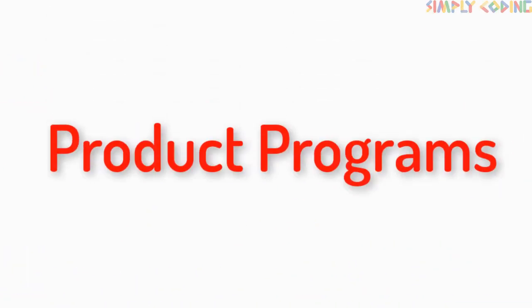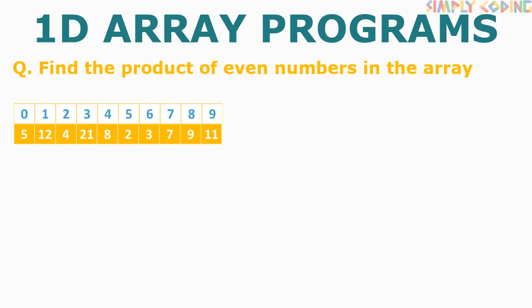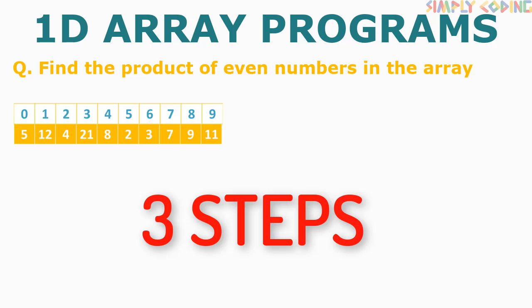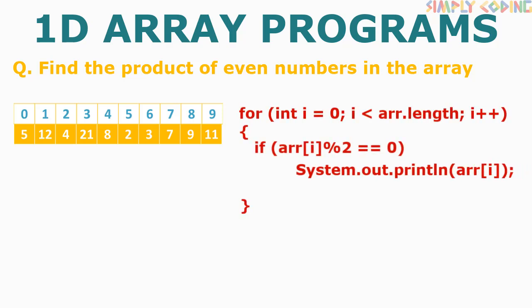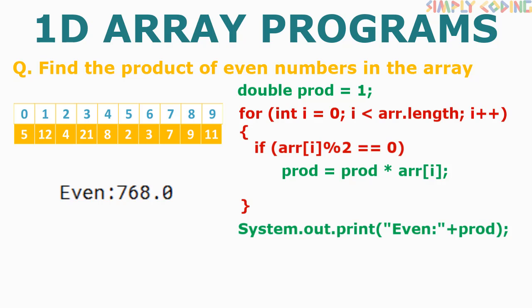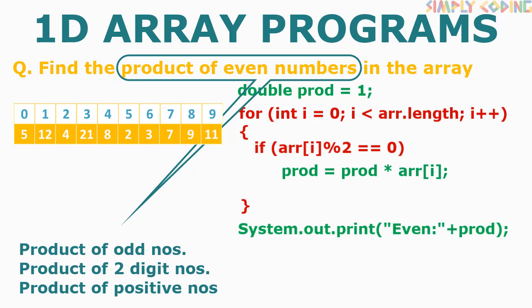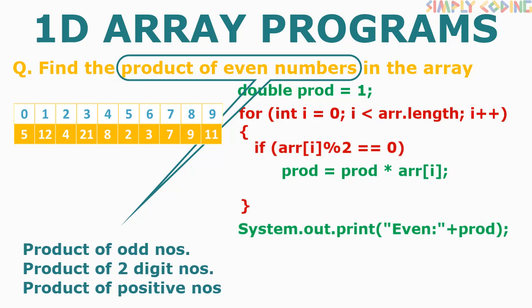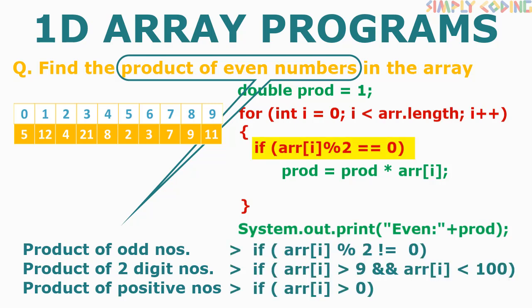Product programs are also similar. To find the product of even numbers, take the even number printing program. Declare a variable to store the product before the loop and initialize it to 1. Where we are printing, instead multiply the array element to the product variable. Once traversal is finished, outside the loop print the product. This can be varied for product of odd numbers, two-digit numbers, or positive numbers — just change the if condition.